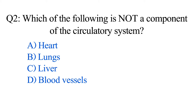Question number two. Which of the following is not a component of the circulatory system? Option A: Heart. B: Lungs. C: Liver. D: Blood vessel. The correct option is Option C: Liver.